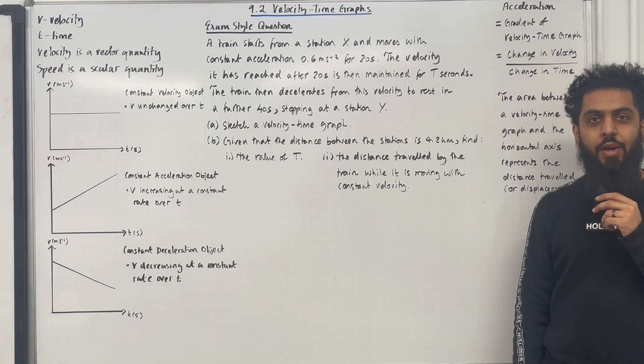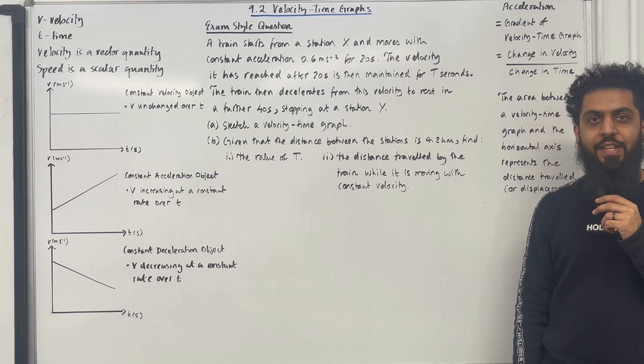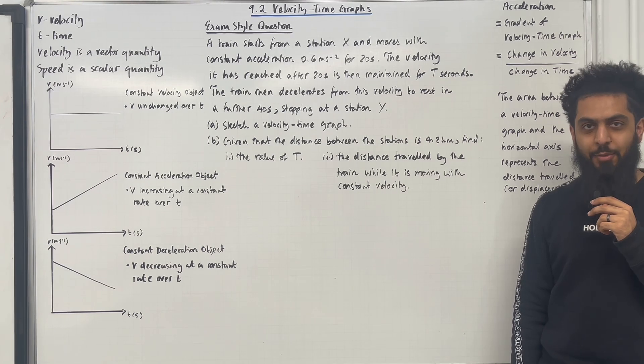Welcome back. In this teaching video, I'm looking at 9.2 velocity-time graphs. 9.2 represents chapter 9, section 2 of the A-level mechanics, master 1. Let's go.